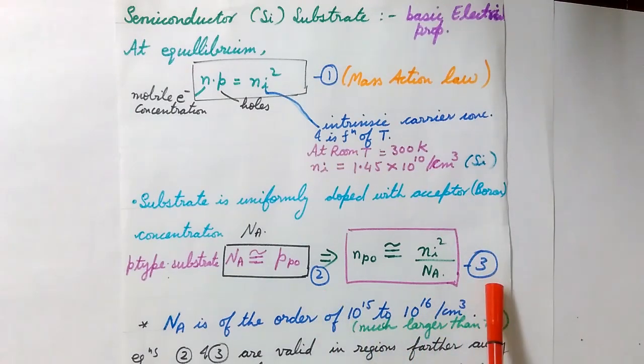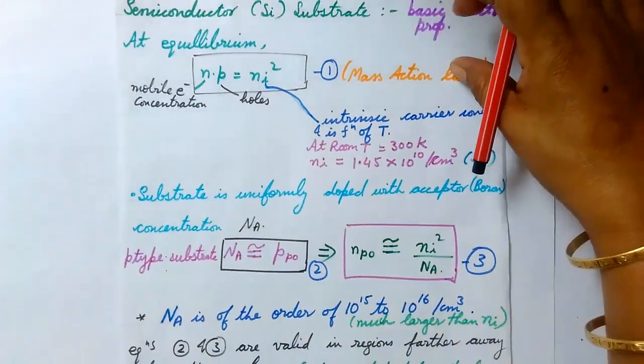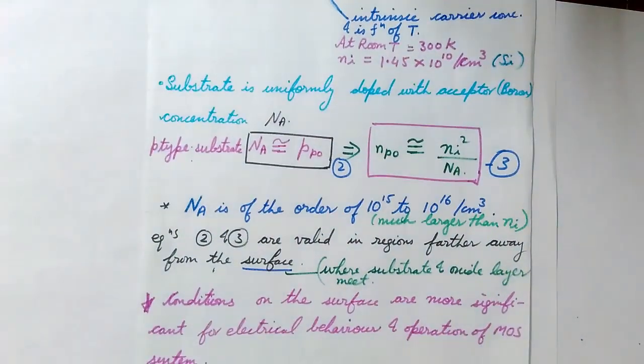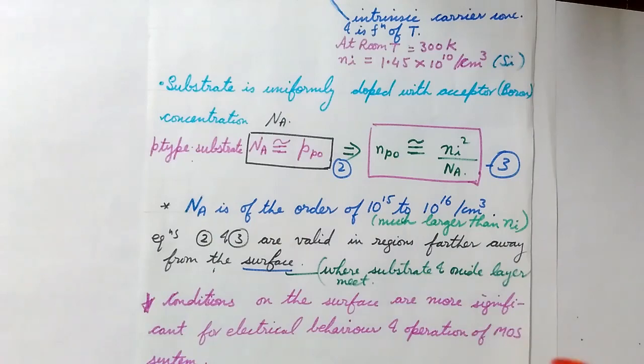Here the equations 2 and 3 are valid far away from the surface. By surface, what do we mean? The surface is called as the point, or the surface is the area where the substrate and the oxide layer meet. These two equations are valid far away from the surface, deep inside the substrate.